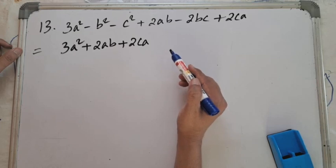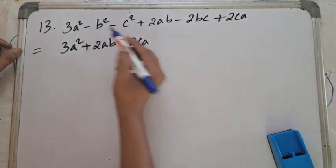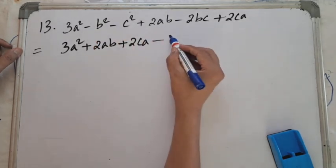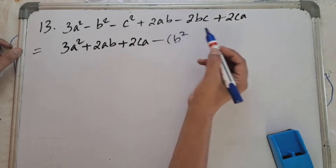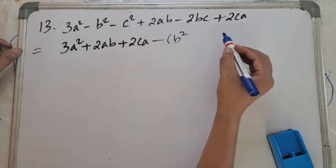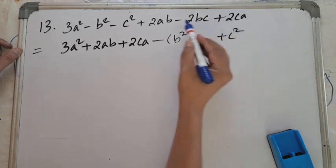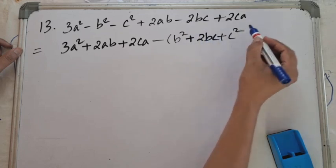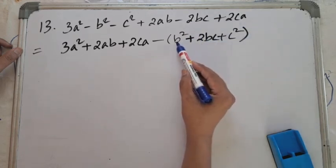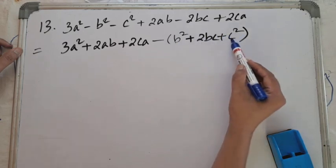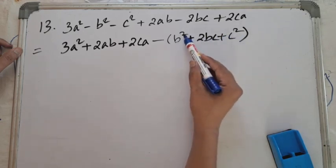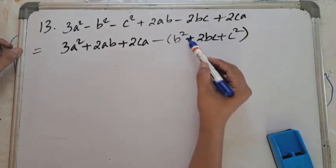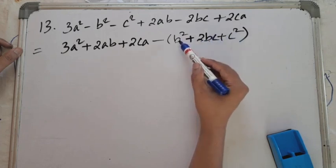When we take minus sign common, the negative numbers become positive. So -b² becomes +b², -c² becomes +c², and -2bc becomes +2bc. This gives us b² + 2bc + c², where b is 'a' and c is 'b' in the identity a² + 2ab + b², which equals (b + c)².